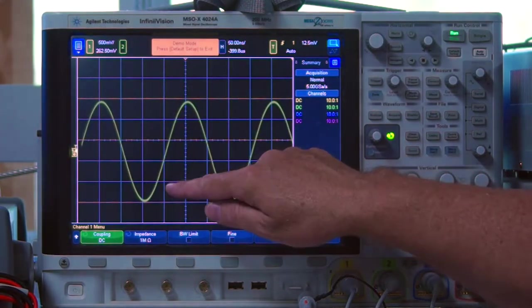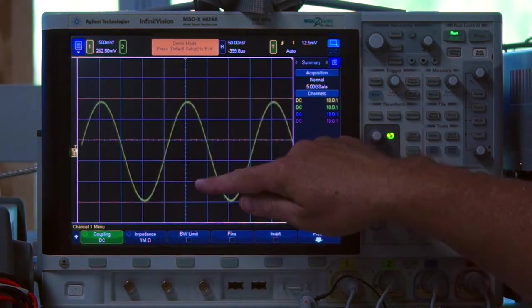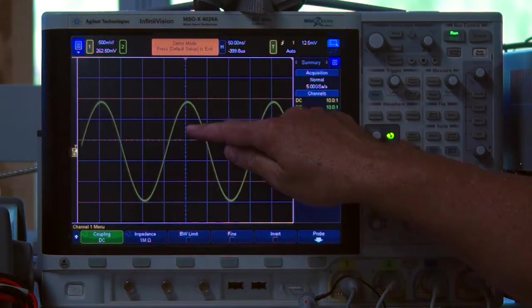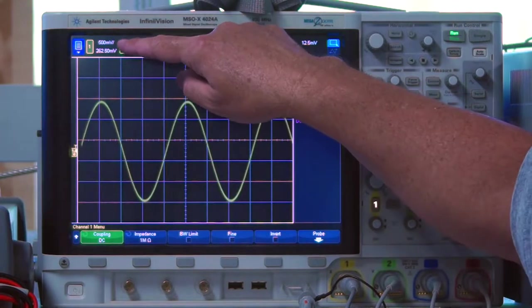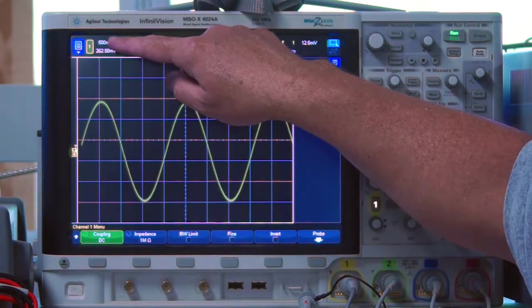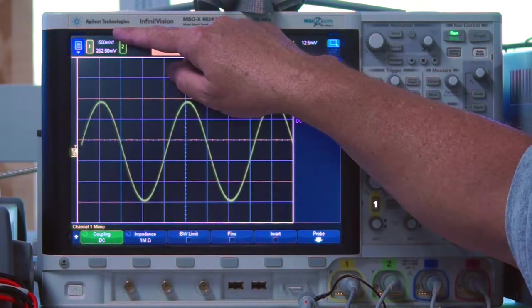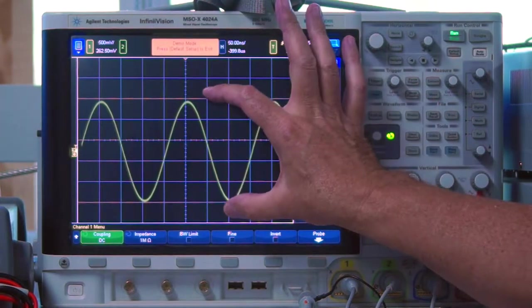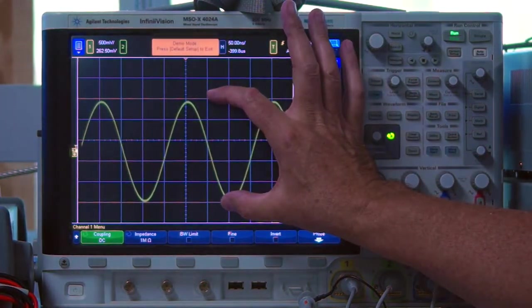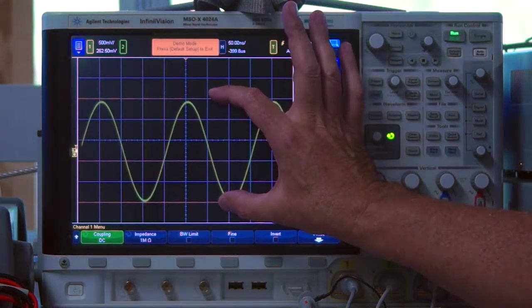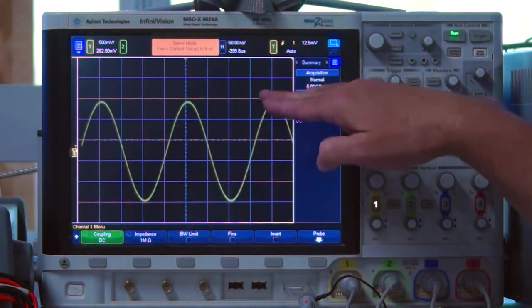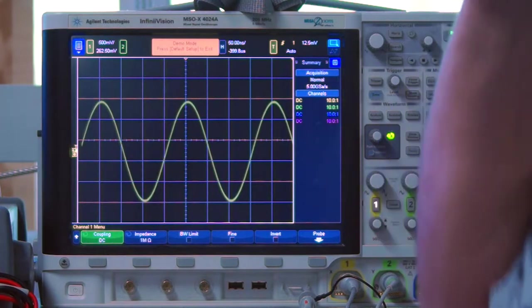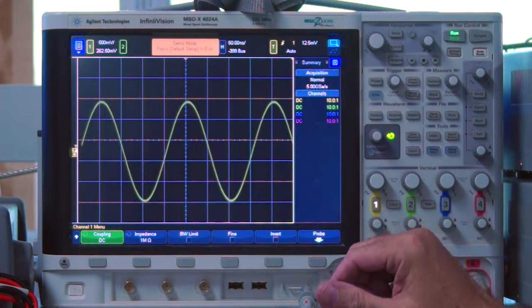So now to measure the height of this particular signal, after I set that on there, you'll notice that I come up from here. To get to the top, I'm going to go up one, two, three, four, approximately five divisions. Five divisions times each division being worth 500 millivolts per division tells me that this signal right here is approximately 2.5 volts peak to peak. So I'm going from the bottom of the trough to the top of the trough, approximately 2.5 volts peak to peak.